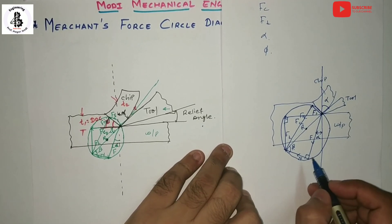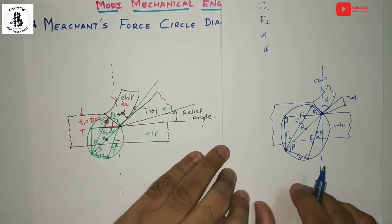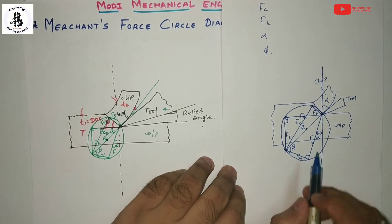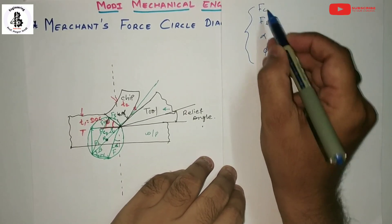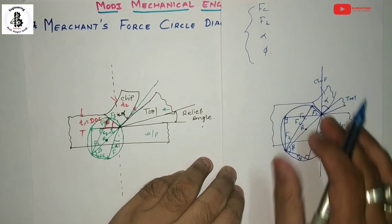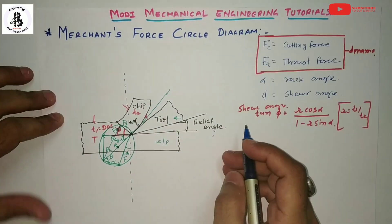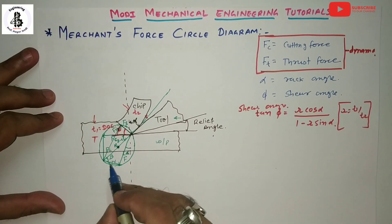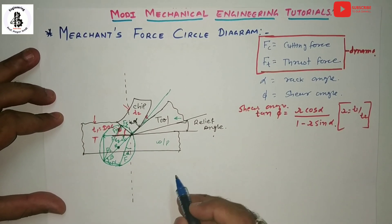The basic conditions for making the Merchant circle force diagram are: you need FC, FT, alpha, and phi — with phi obtained from the chip thickness ratio. The figure shows the completed Merchant circle diagram.